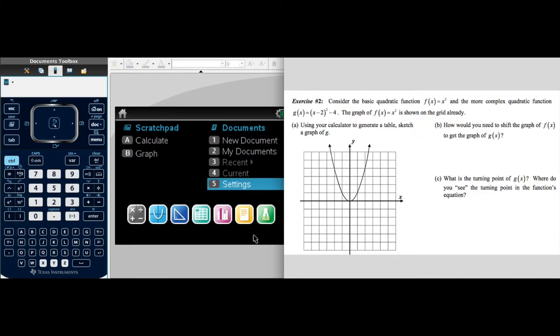Consider Exercise 2. Consider the basic quadratic function f(x) equals x squared and the more complex quadratic function g(x) equals the difference of (x minus 2) squared minus 4. The graph of f(x) is shown on the grid already. Using your calculator to generate a table, sketch a graph of g. Let's get right over there.